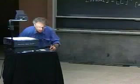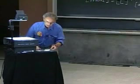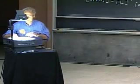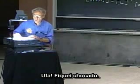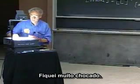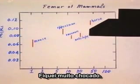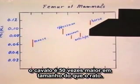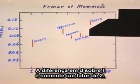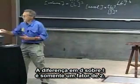And here it is. I was shocked — I was really shocked. Because look: the horse is 50 times larger in size than the mouse, and the difference in D over L is only a factor of two.